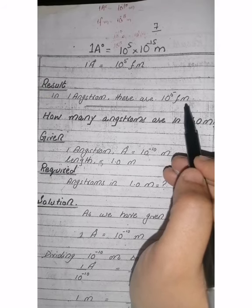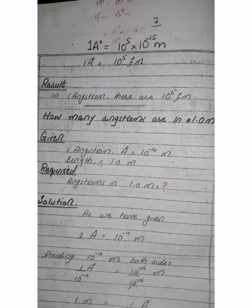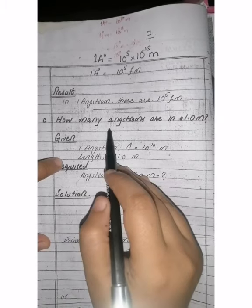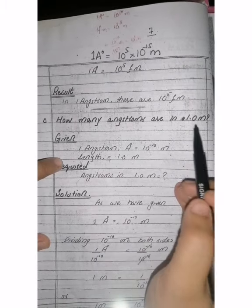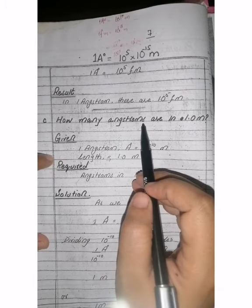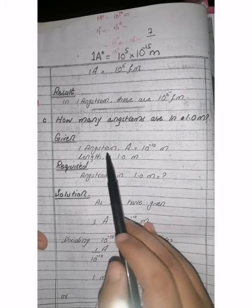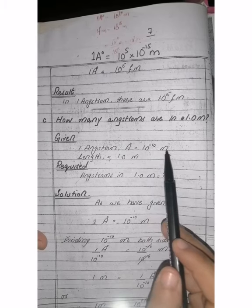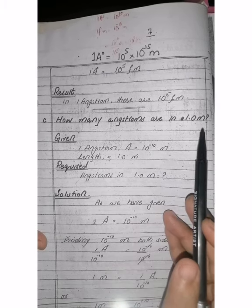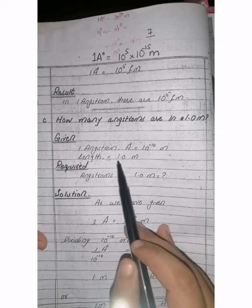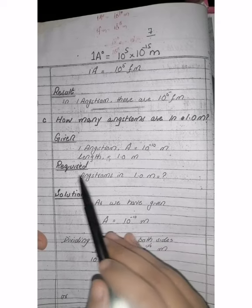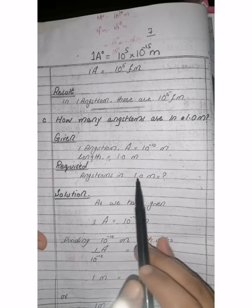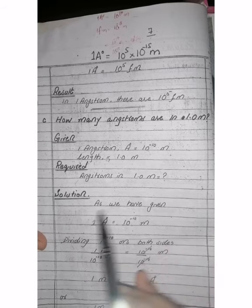So how many femtometers are in 1 angstrom? 10 raised to the power of 5 femtometers. Part B is also complete. Numerical number 2, Part C: how many angstroms are in 1 meter? Given: 1 angstrom is equal to 10 raised to the power of minus 10 meters. Required: angstroms in 1 meter = ?